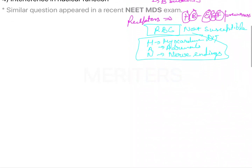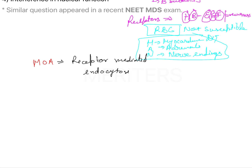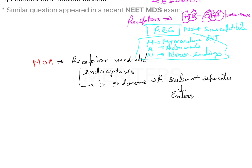The mechanism of action of this toxin, which has been asked in this question, begins with receptor-mediated endocytosis. Inside the endosomes, the A subunit separates and enters the cytoplasm.